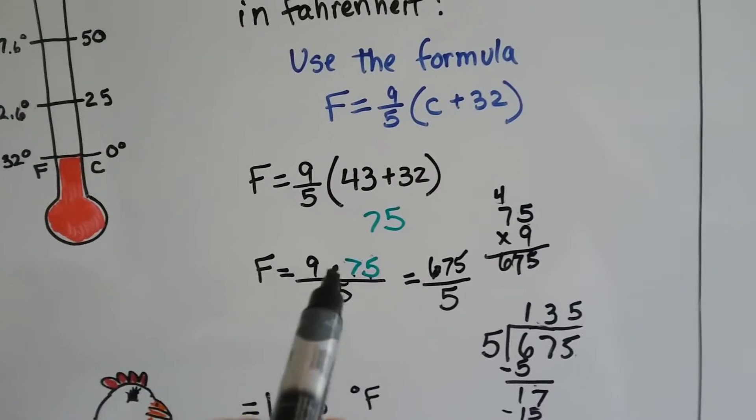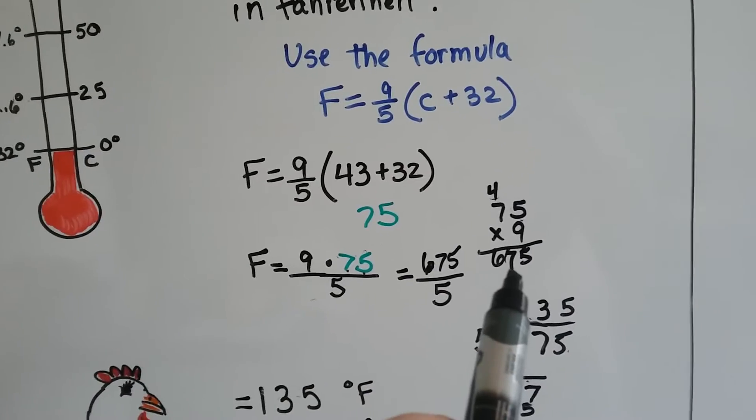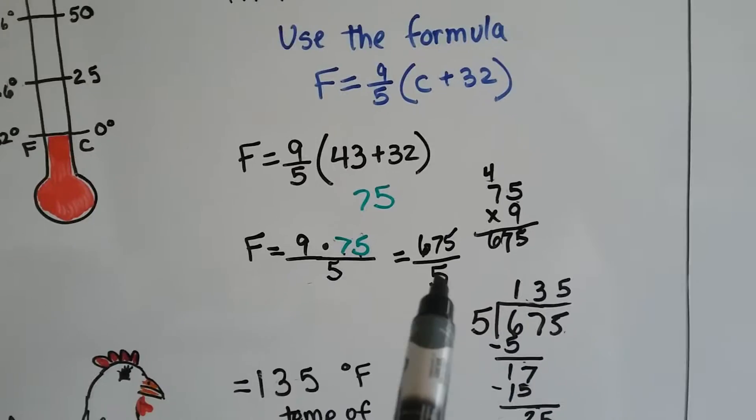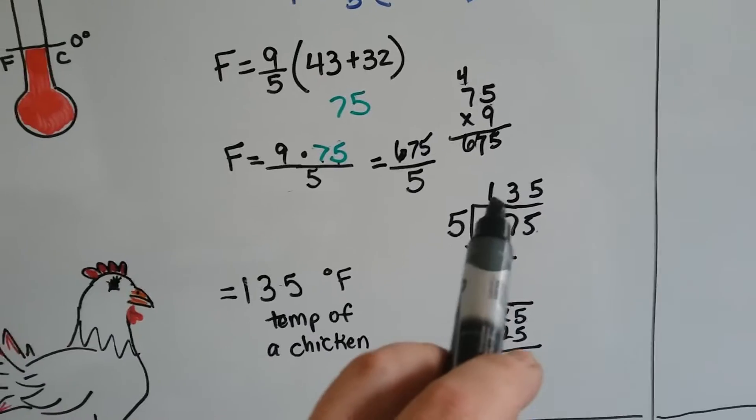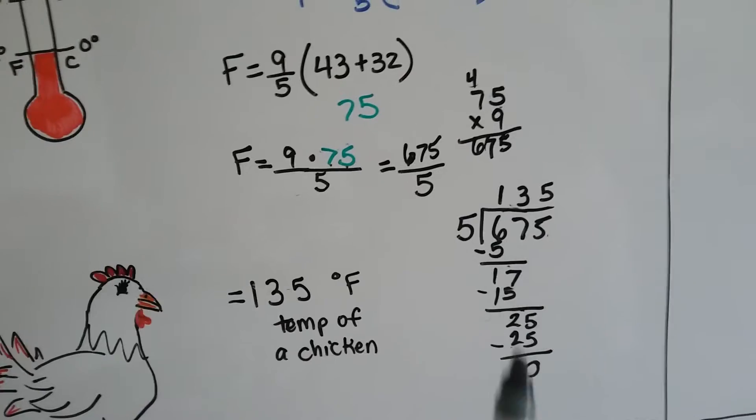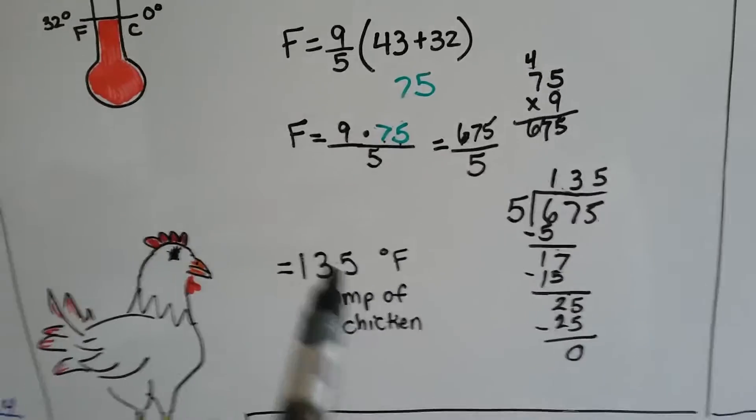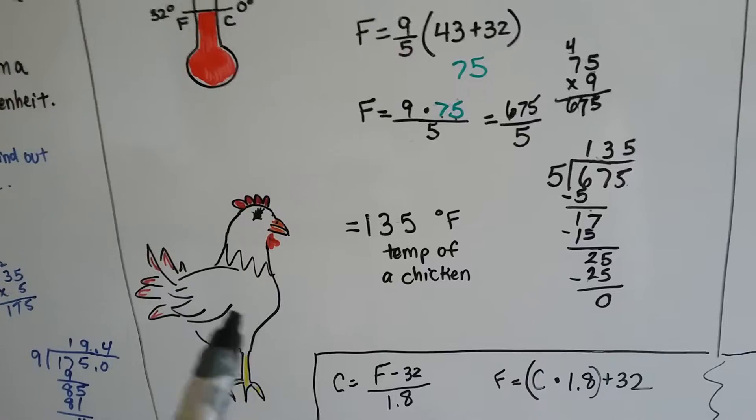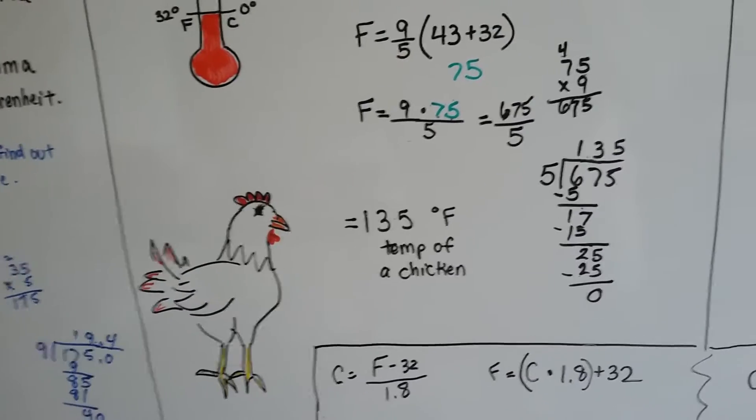We multiply that times 9, and we get 675. We put that over the 5 and divide, and we get 135 when we do our long division. So the average temperature of a chicken is 135 degrees Fahrenheit.